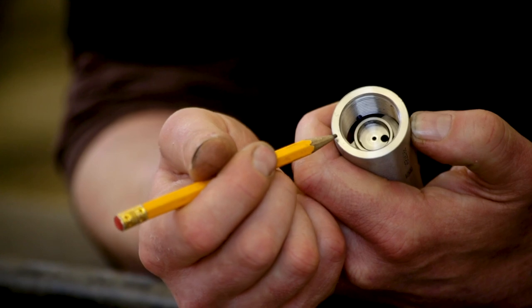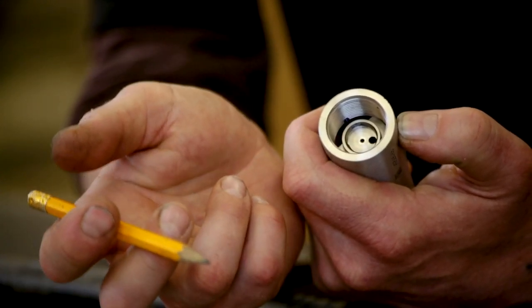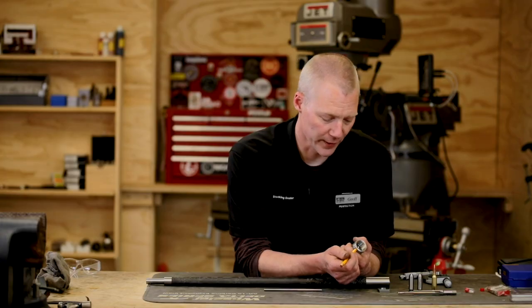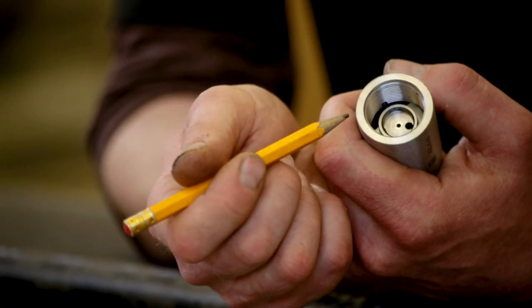The second will be the receiver face to the bolt nose. This will give me the depth required for the bolt nose recess. The third measurement will be from the receiver face to the bolt face itself. This will give us our headspace dimension.